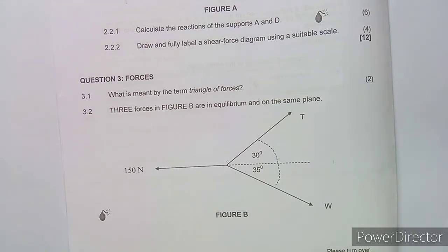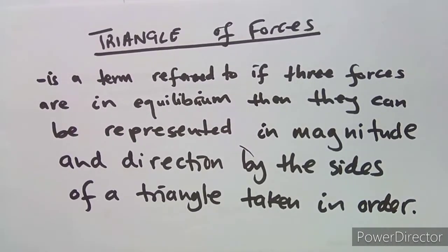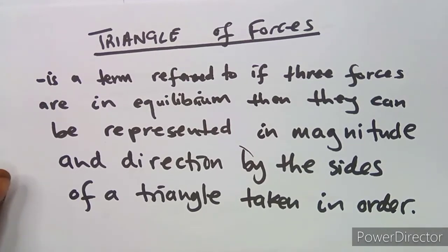The first part is question 3.1: what is meant by the term 'triangle of forces'? This definition I have talked about in previous classes. It refers to: if three forces are in equilibrium, then they can be represented in magnitude and direction by the sides of a triangle taken in order.